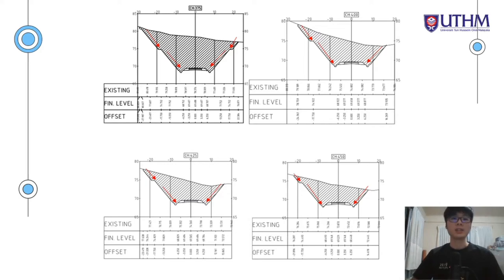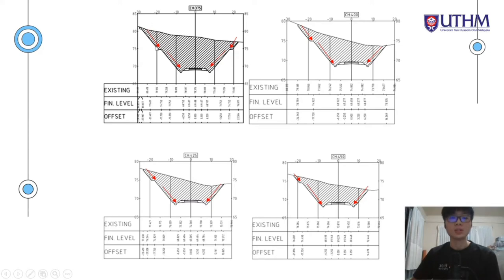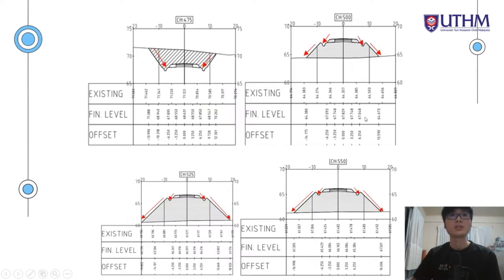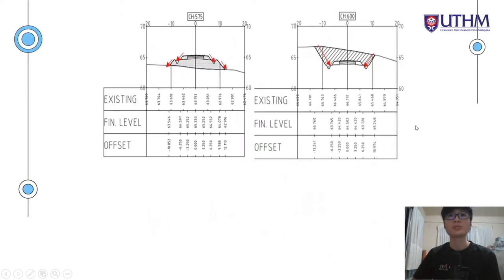I have analyzed and sketched the direction of flow within the drain from channel 375m to channel 600m. This shows the direction of flow within the drain. For example, for channel 375m, the direction of flow is from the interceptor drain to the bench drain, and then finally to the roadside drain. That's all from me, thank you.